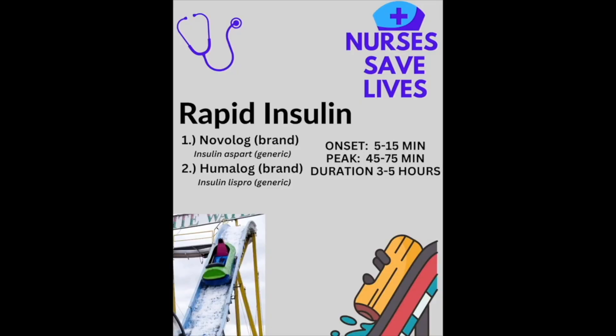For rapid-acting insulin, we have two major ones to consider. We have Novolog, the brand name, with the generic insulin Aspart. We have Humalog, the brand name, with the generic insulin Lispro. Both are rapid-acting, meaning they affect the patient rapidly. The onset is 5 to 15 minutes, peak duration is 45 to 75 minutes, and duration lasts 3 to 5 hours. A great way to remember these is 'logs' — Novolog and Humalog both end in 'log.' Think of the log ride at Disneyland — you're going fast, rapid!